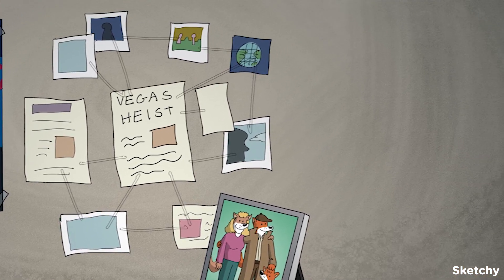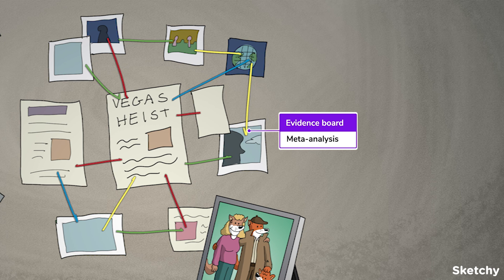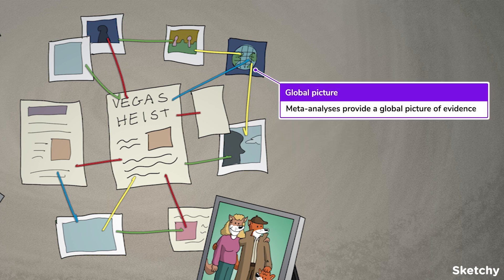The meta-analysis takes the systematic review one step further by actually quantifying all of the available evidence. Like StatLock's rather sophisticated evidence board, the meta-analysis uses a sophisticated statistical analysis tool to derive an aggregated measure of effect. Whoa, has this heist gone global? The beauty of meta-analysis is you get a global picture. Figuratively speaking, you're summarizing the whole.